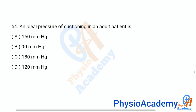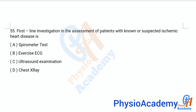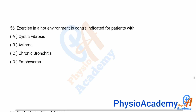Question 55: The first-line investigation in the assessment of a patient with known or suspected ischemic heart disease is — Option A: spirometer test. Option B: exercise ECG. Option C: ultrasound examination. Option D: chest X-ray. The correct answer is option B, exercise ECG.